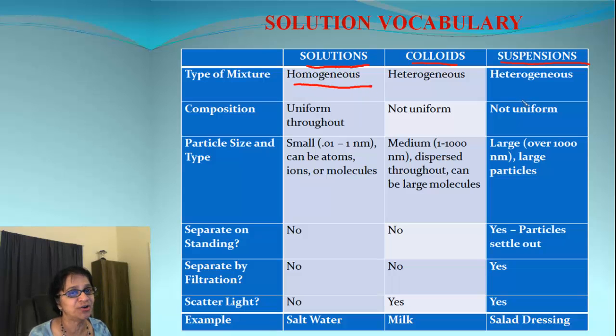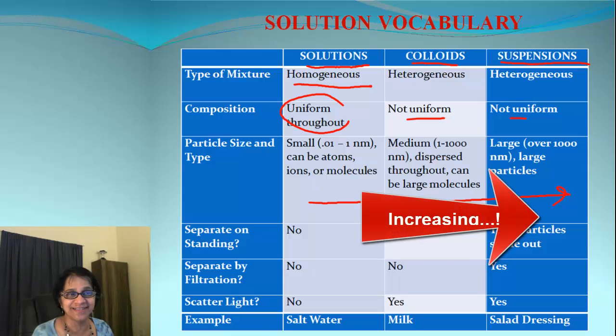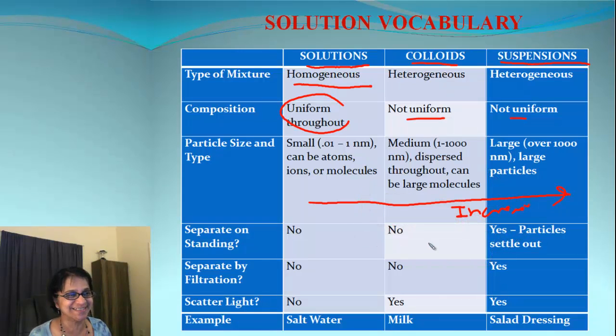Whereas colloids and suspensions are heterogeneous, meaning they are not uniform. About the particle size, as we go from solutions to suspensions, particle size will be increasing. That means it will be highest for suspensions and lowest for solutions.